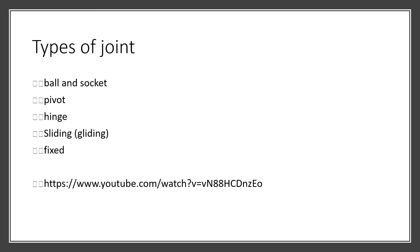We're now moving on to the types of joints. The types of joints you need to know for your exam are the ball and socket, pivot, hinge, sliding or gliding, and the fixed joint.